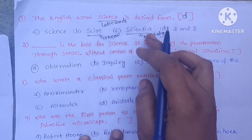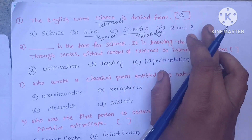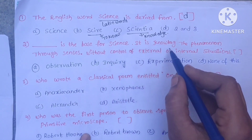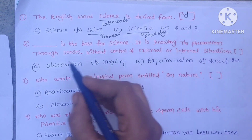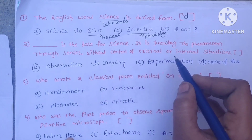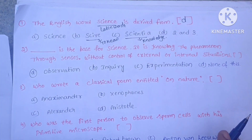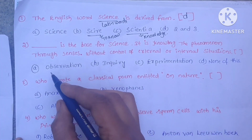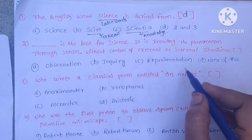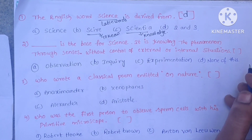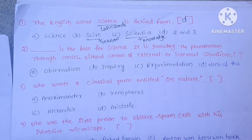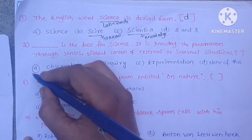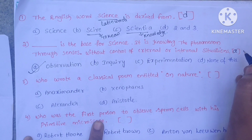So the correct answer is Option D — Siree and Scientia (2 and 3). The second question is: what is the base for science? It is knowing phenomena through senses without control of external or internal situations. Options: A. Observation, B. Inquiry, C. Experimentation, D. None of these. Science begins with observation, so the correct answer is A. Observation.